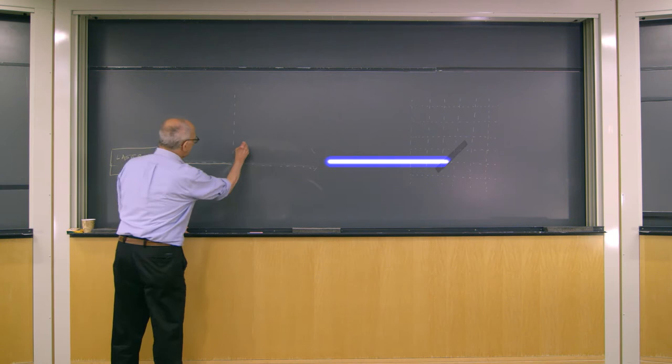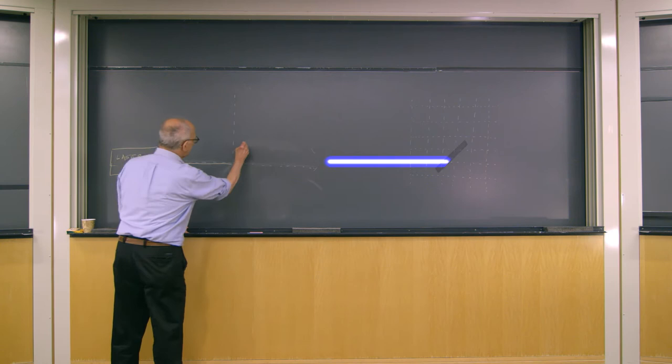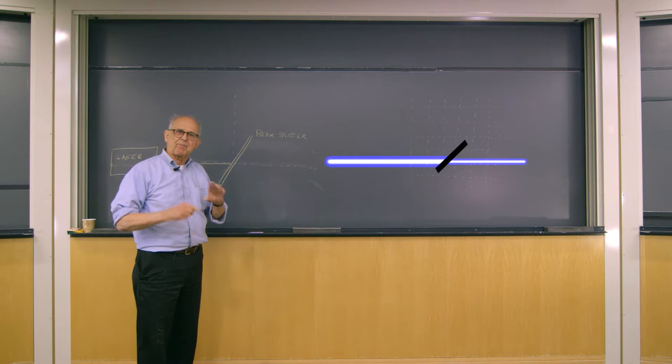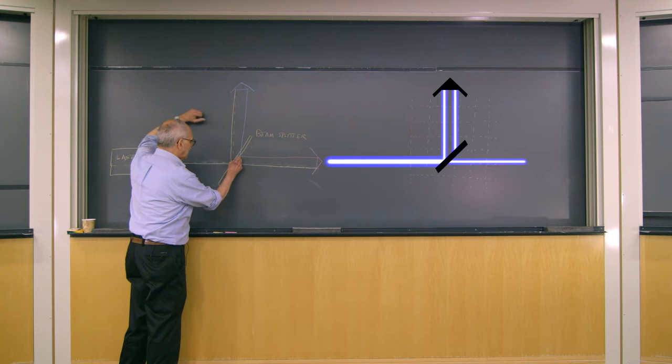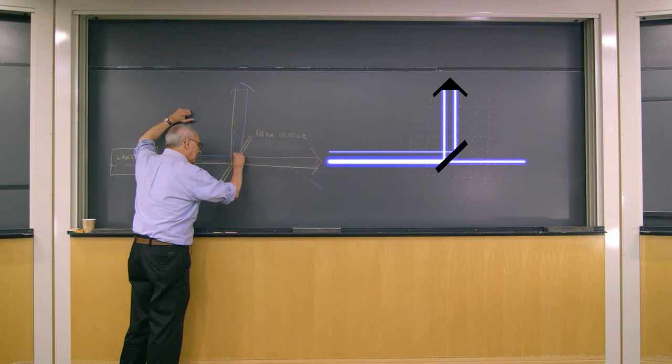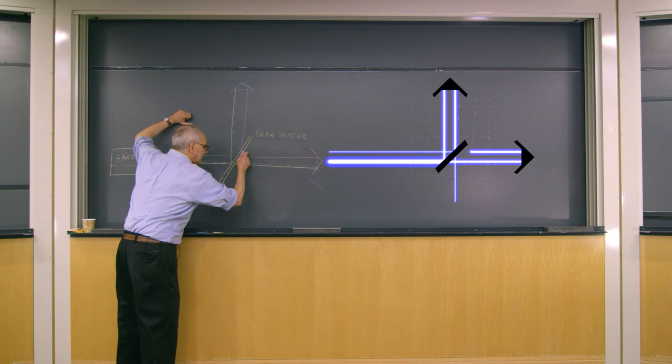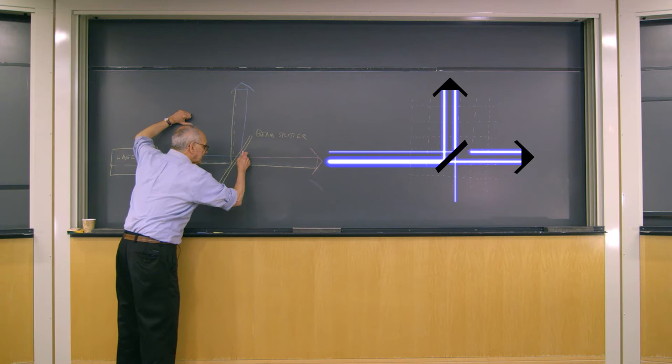The beam splitter is a device that transmits about half the light that hits it, and also reflects about half the light that hits it. This beam got reflected from here, went up, got reflected inside this mirror at the corner, comes down, and gets reflected back to the source. Another thing that happens is it also gets transmitted, so it comes down like that. But there's also light that goes the other way — it hits the beam splitter and also gets reflected. They both get reflected together and come to a photodetector.